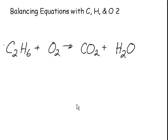We have another equation now with carbon, hydrogen and oxygen. We do the carbons first. We have two C's on the left and one C on the right. To balance the C's, we must put a 2 in front of the CO2.